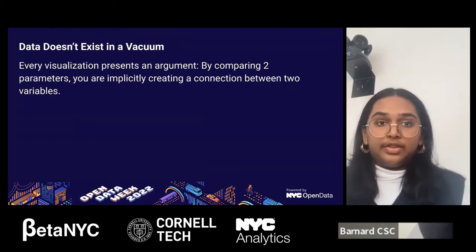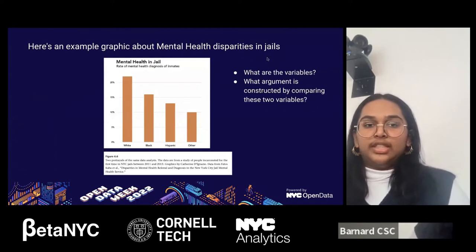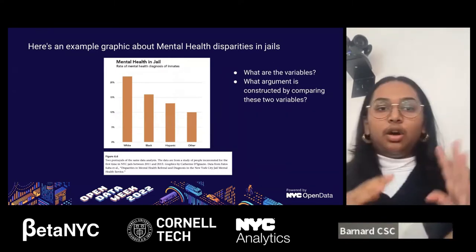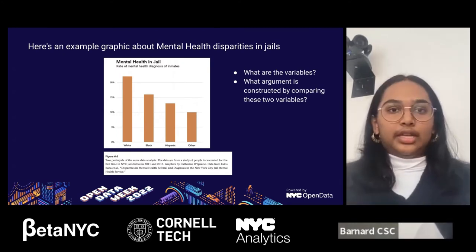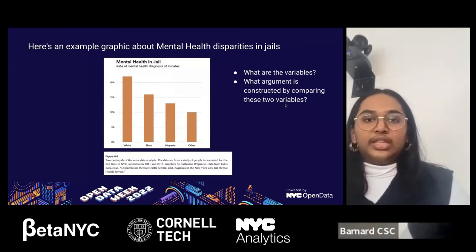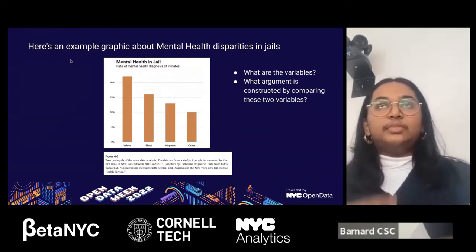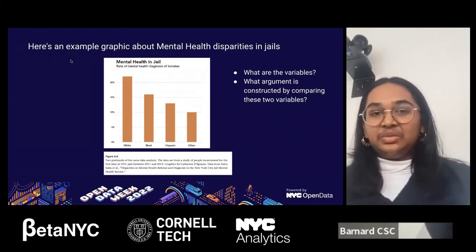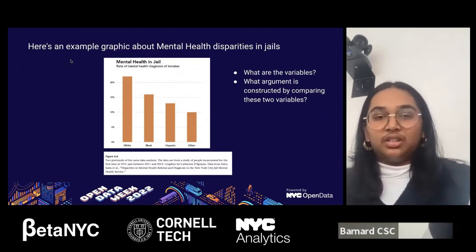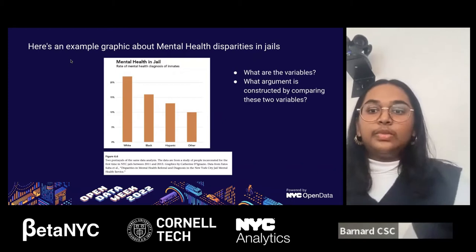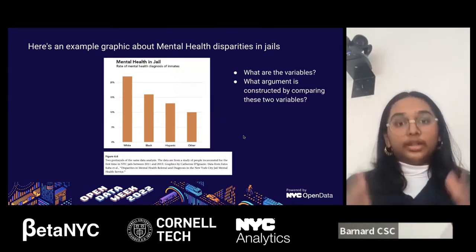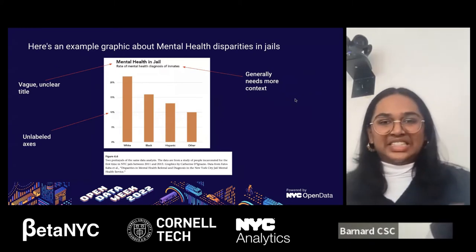Here's an example graphic about mental health disparities in jails. We have a visualization with different race and ethnicity groups on one side. A few things could be better: the dataset doesn't mention the years, specific jails, or population being discussed. This title is vague — we don't really know what 'diagnosis' specifically refers to. Is it referrals, literal diagnoses, or symptomology? And the left axis is completely unlabeled, so we can't tell if that 20% refers to a proportion within a race group or across all inmates.